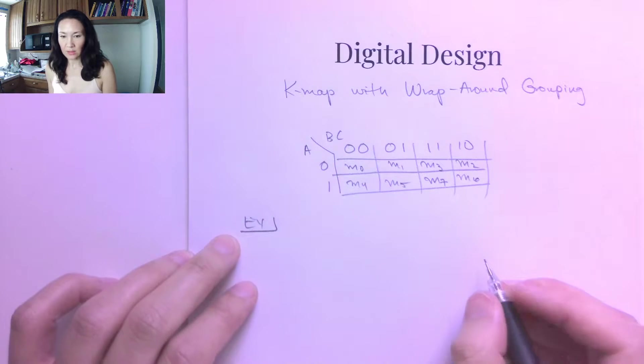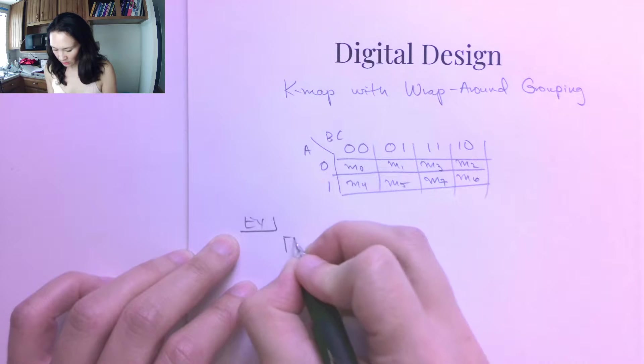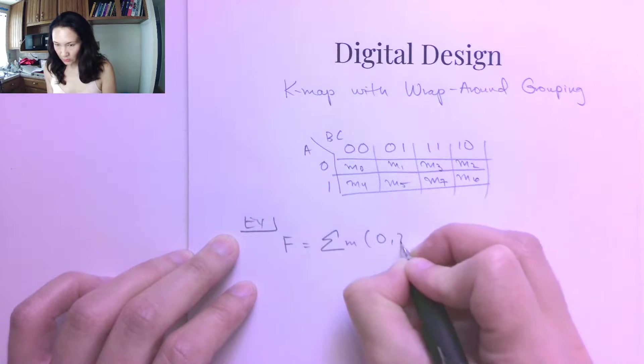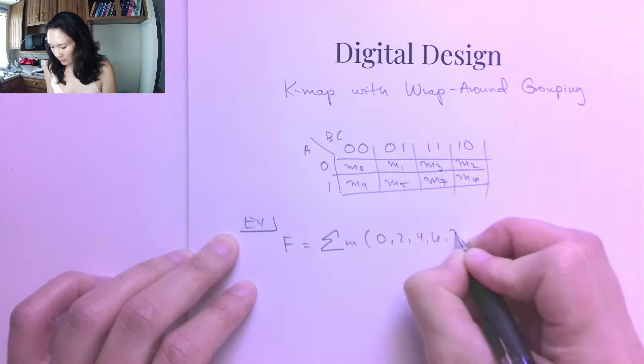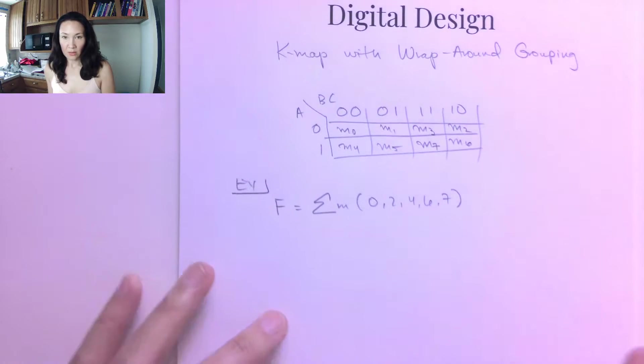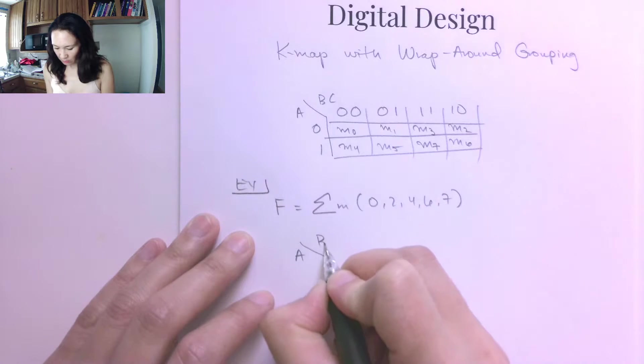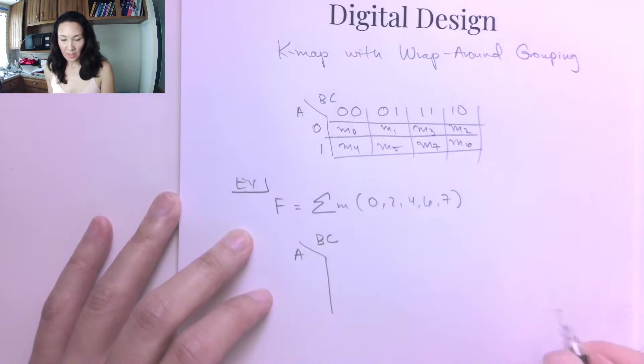Suppose we want to simplify a function in minterm notation, the sum of minterms 0, 2, 4, 6, and 7. So we're going to make our 3-input Karnaugh map. I put A on the left side, and I put B and C up on the right, and now my possible inputs for A are 0, 1.